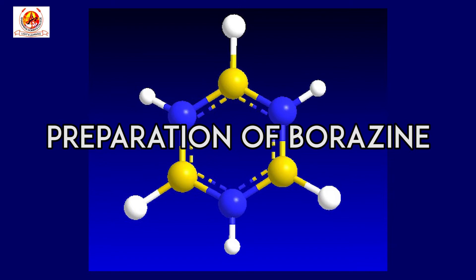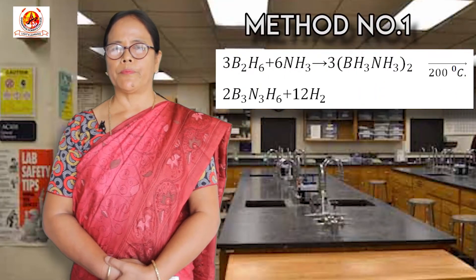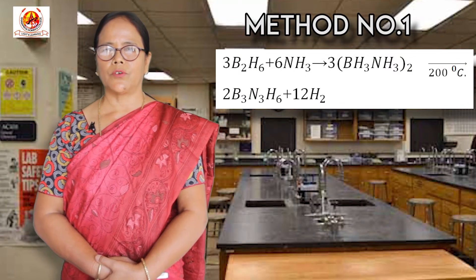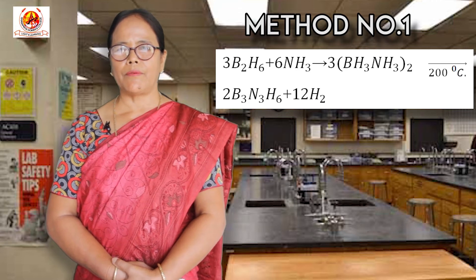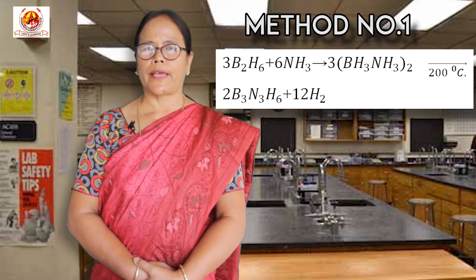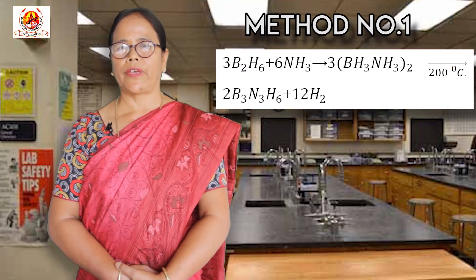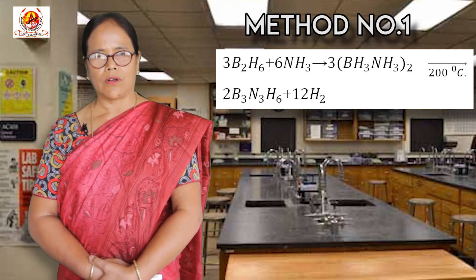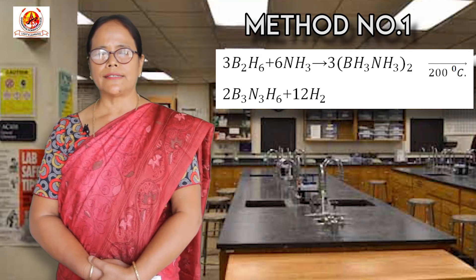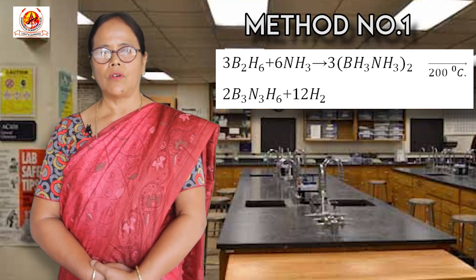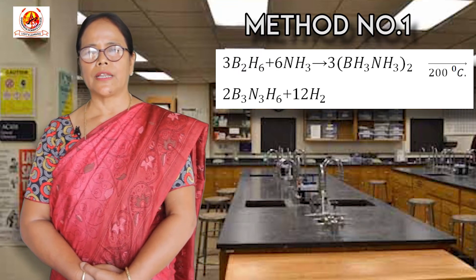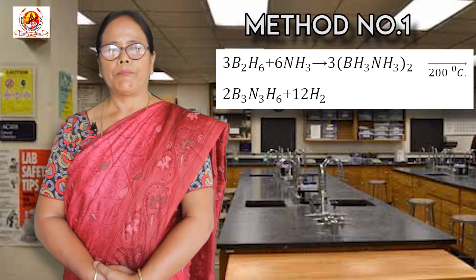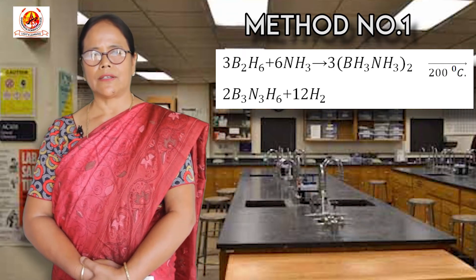The next step is how to prepare borazine. In method number one, borazine can be prepared by the reaction of ammonia with diborane. The adduct, diaminodiborane, is first formed which is then decomposed by heating in a closed tube at 200 degree centigrade. Cyclization occurs to give borazine, but yield is somewhat low because of the simultaneous formation of solid polymeric byproducts, B3N3H6.